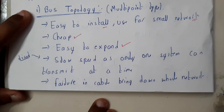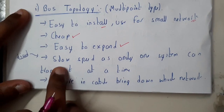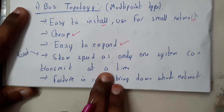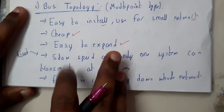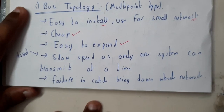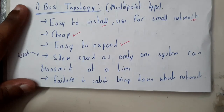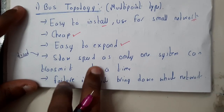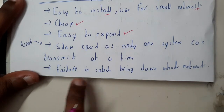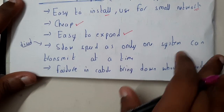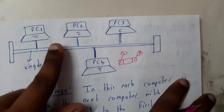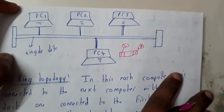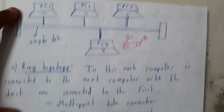The disadvantages of bus topology are slow speed, since only one system can transmit at a time. If two systems transmit simultaneously there could be a collision and none of the messages will reach the destination. Another disadvantage is that failure in a single cable will break the whole network — if you remove the wire, the entire circuit stops working.